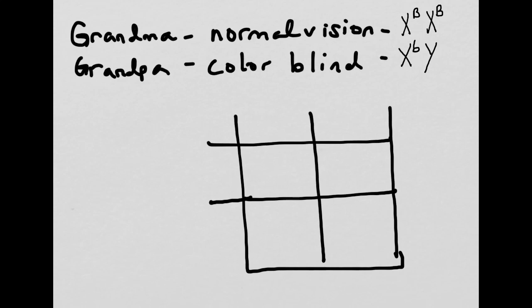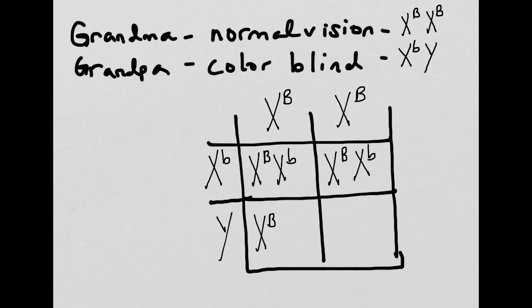Okay, so now let's see what kind of children grandma and grandpa can have. All right. So we'll write them in. Grandma's X big B, X big B. Grandpa's X little b, Y. So cross them and see what you get. X big B, X little b, X big B, X little b, X big B, Y. X big B, Y. All right.